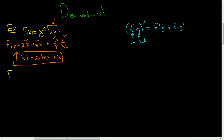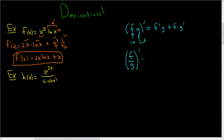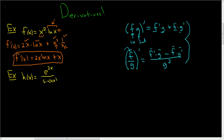Let's do another example. h of x equals e to the 2x over the sine of 4x. Here we have a quotient, so we'll use the quotient rule. If you have a quotient, f over g, it's the derivative of the first or top piece, times the second or bottom piece, minus the first times the derivative of the second, all over the second squared. The reason I use these formulas is because they match: f prime g, f g prime.